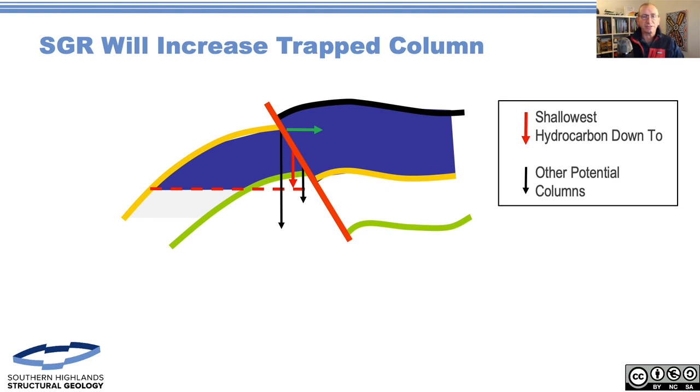It's vital that you actually make Allan maps and do the shale gouge ratio calculation on Allan maps. You cannot do this in a one-dimensional sense, and certainly not at a single point on a fault. You need to map out the shale gouge ratio across each of the juxtaposition windows.